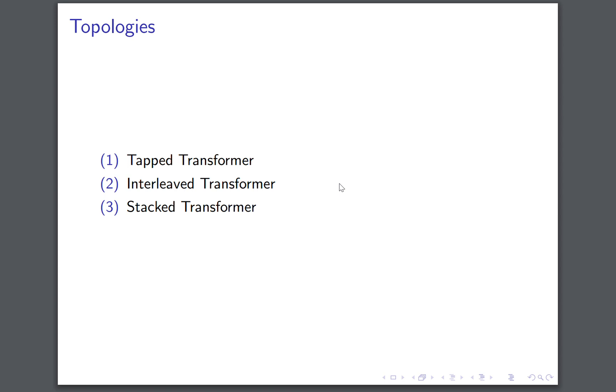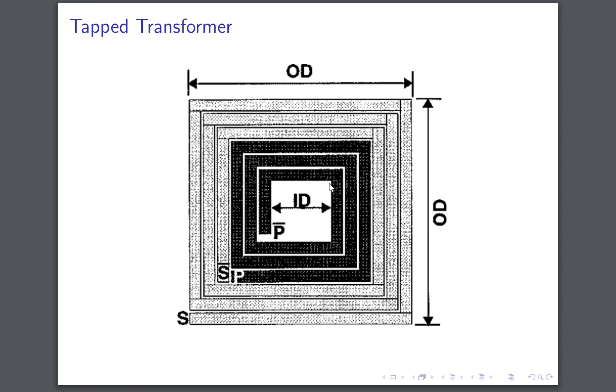So now I will move on to the section on topologies. Basically, on-chip transformers broadly and most generally used can be classified into 3 topologies: the first being the tapped transformer, second interleaved, and third is the stacked transformer. Tapped transformer has typically this structure. You have one pair of coils at the center and this other pair of coils is wound around the first one.